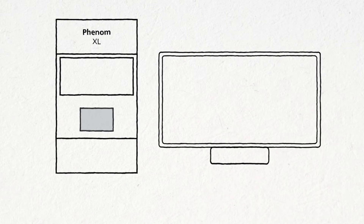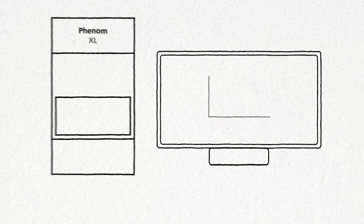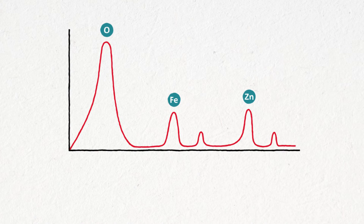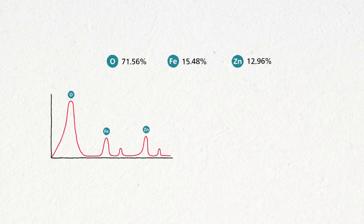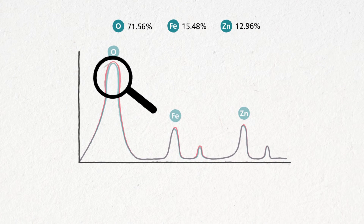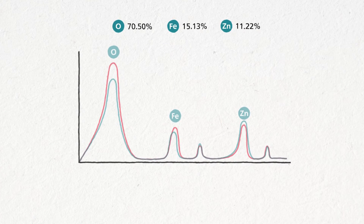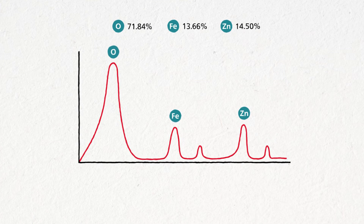The quantification mechanism in the Phenom is based on forward modeling. It works by analyzing which elements are present in the spectrum and providing a first quantification. Then a synthetic spectrum generator creates a spectrum based on that composition and matches it with the one that was measured during the analysis. By iterating and using different compositions, different spectra are generated and progressively compared with the measured spectrum until we get the perfect match, and that results in the quantification.